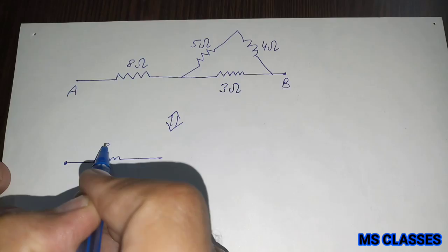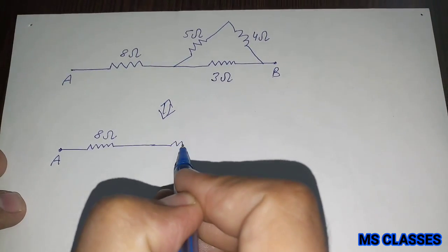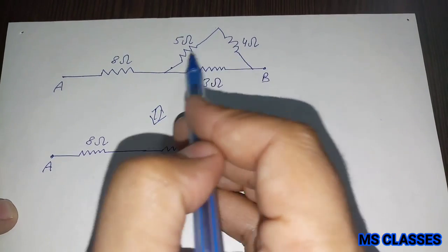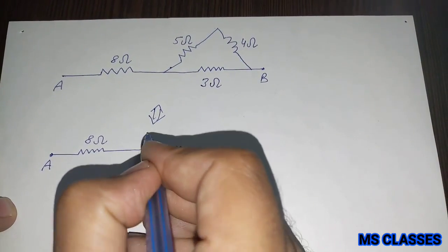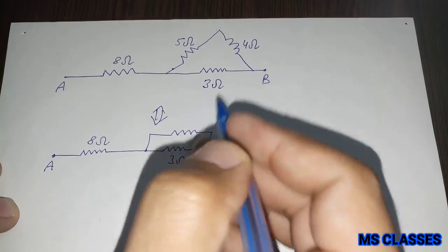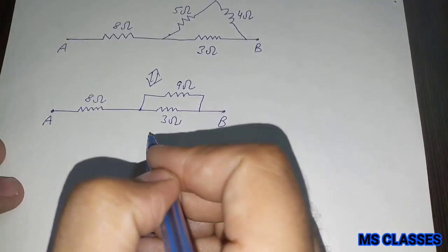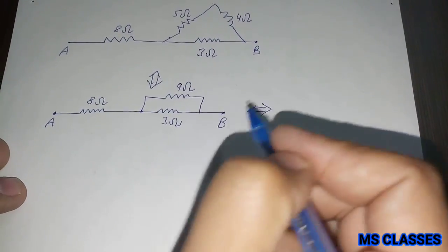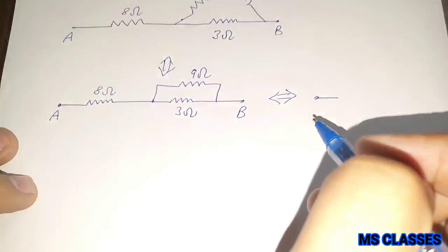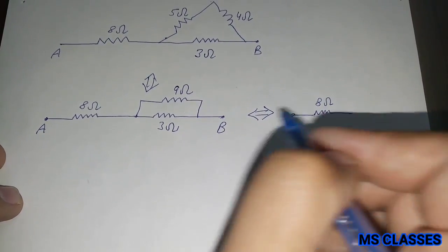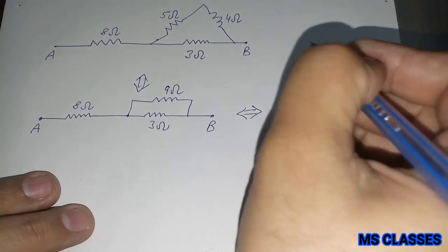This is 8 ohm. This is 3 ohm. As 5 and 4 both are connected in series, so 5 plus 4 is 9 ohm. Now 3 and 9 both are connected in parallel.